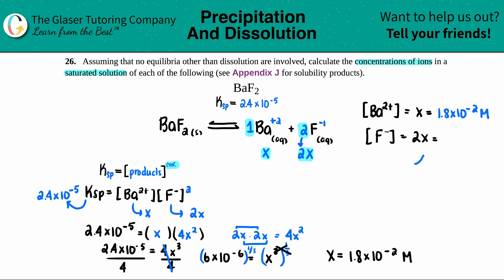But then you would have to plug in the 1.8 times 10 to the negative second times 2. So 1.8 times 10 to the negative second times 2, 3.6 times 10 to the negative second molarity. Two times more than that of the barium. And those are your two answers. Calculate the concentration of all the ions. There was only two of them. And that's it.